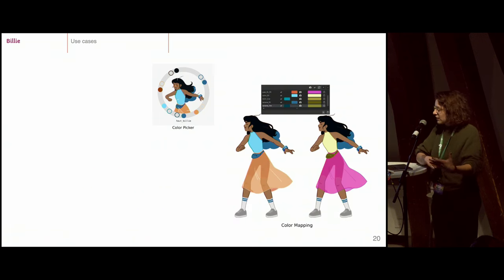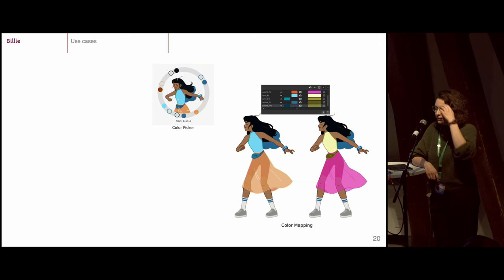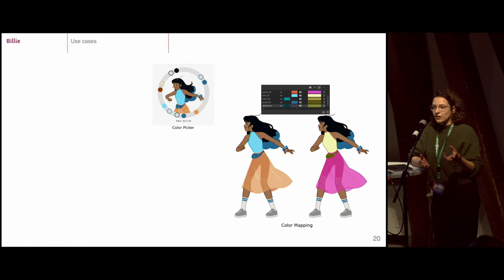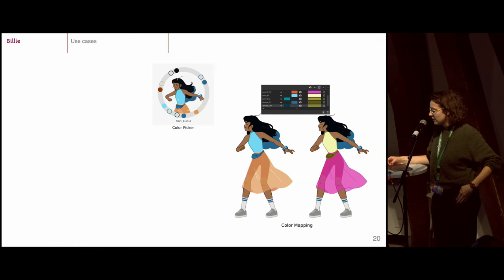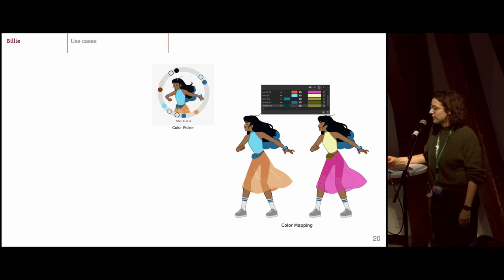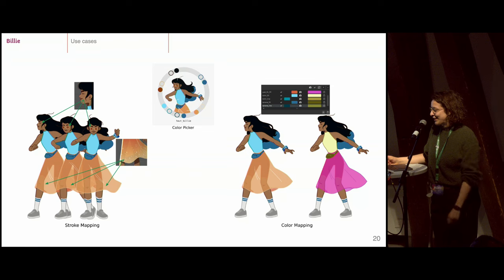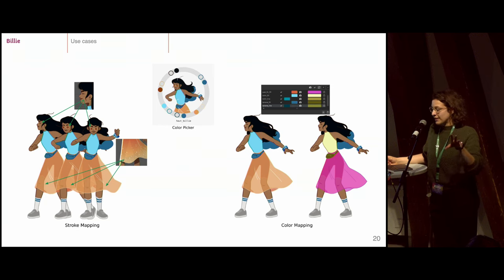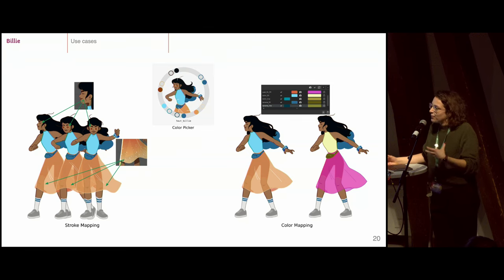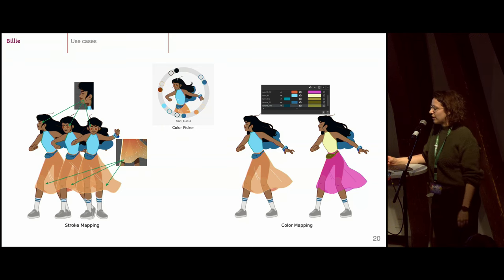Another use case is testing color changes. We made a small color mapper — the beginning of a development we started last year — and it could be great for changing color schemes or simulating lighting changes in 2D. Since the background is also made in Grease Pencil, you can completely change the color of the image within Blender. There's also stroke mapping: the freckles on the skin and small details on the dress that we want to help include in animation without drawing them in every single frame.